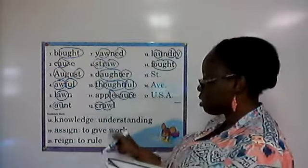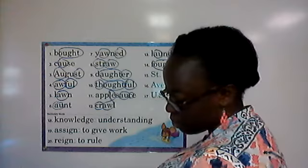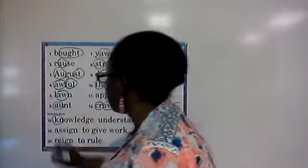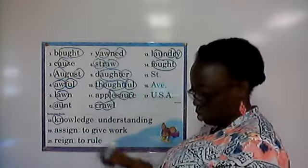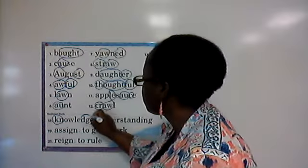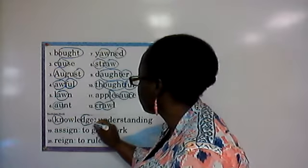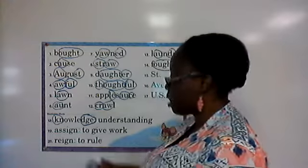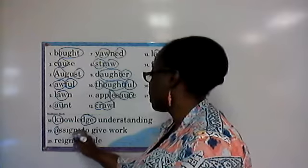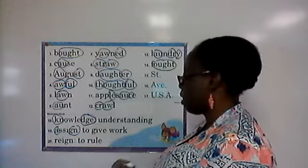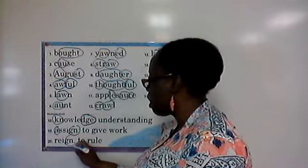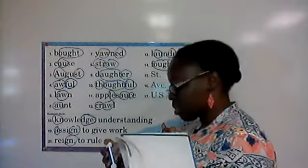For the special sounds in abbreviations and the vocabulary words: we have 'kn' as in not: K-N, and 'j' as in fudge: D-G-E. In the word assign, we have 'a' as in adopt and 'gn' as in gnat: G-N. In the word reign, we also have 'gn' as in gnat: G-N.